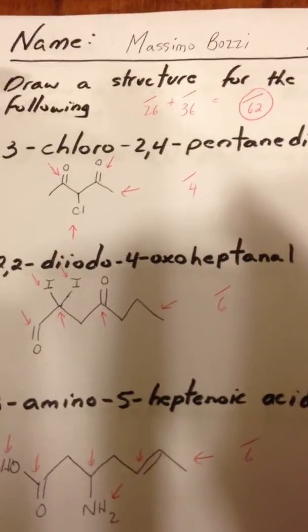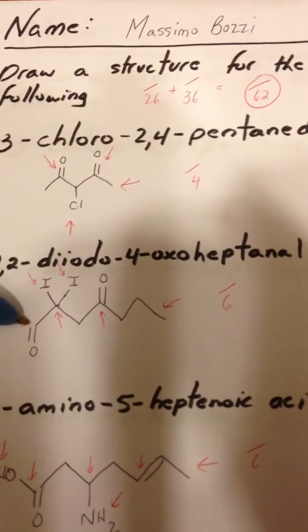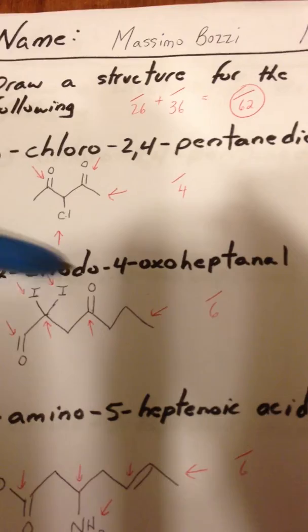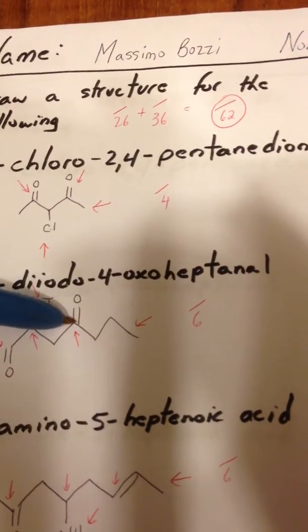For 2,2-di-iodo-4-oxo-heptanol, we start counting at this end. This is the second position. This is where the two iodine atoms are placed. Here's the carbonyl for the ketone.